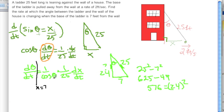So what's the cosine of theta when x equals 7? It's going to be 24 over 25 - you can read it right off this triangle. And we're doing 1 over that, so 1 over (24/25) is the same as 25/24 times 1 over 25, and we have dx/dt.